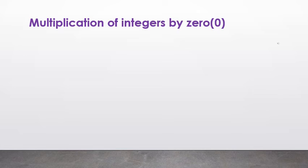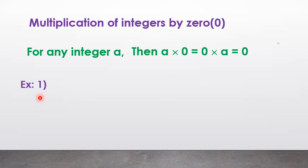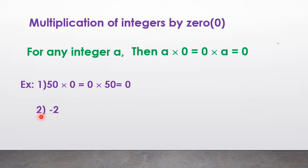Multiplication of integers by 0: for any integer a, a × 0 = 0 × a = 0. For example, 50 × 0 = 0 × 50 = 0. Second example, (−250) × 0 = 0 × (−250) = 0.